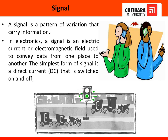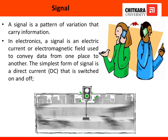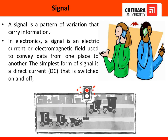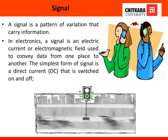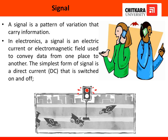When it shows red, then everything stops. But when it shows green, everything is moving. So overall, in a nutshell, we can say that a signal is something which helps to convey information from one place to another, or from one person to another.